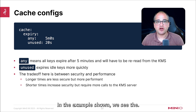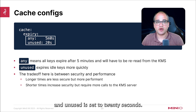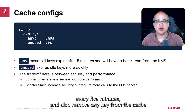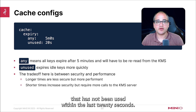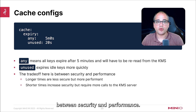In the example shown, we see the 'any' configuration is set to 5 minutes, and 'unused' is set to 20 seconds. This means that the KES server will clear the entire in-memory cache every 5 minutes, and also remove any key from the cache that has not been used within the last 20 seconds. Cache invalidation is going to allow you to get different trade-offs between security and performance.